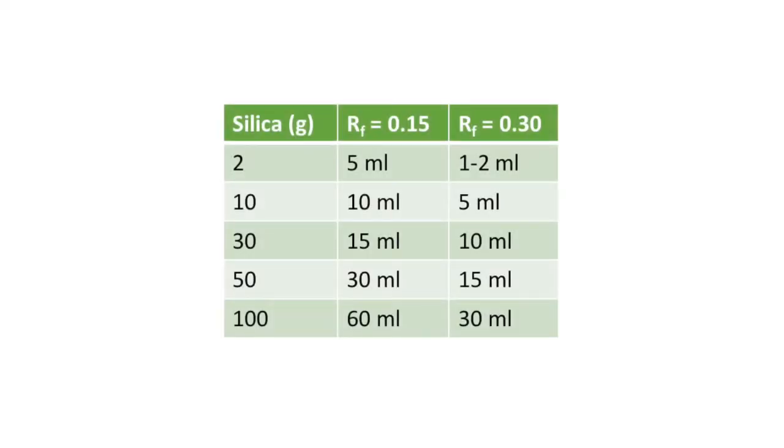For large columns there is no point in collecting lots of small fractions because they will end up being recombined. However, collecting only a few large fractions may result in you ending up with two bands in the same fraction, especially if the bands come off the column close together or if there is a tailing of the leading band. A useful rule of thumb to help you decide the volume of the fractions to collect is summarized in the following table.